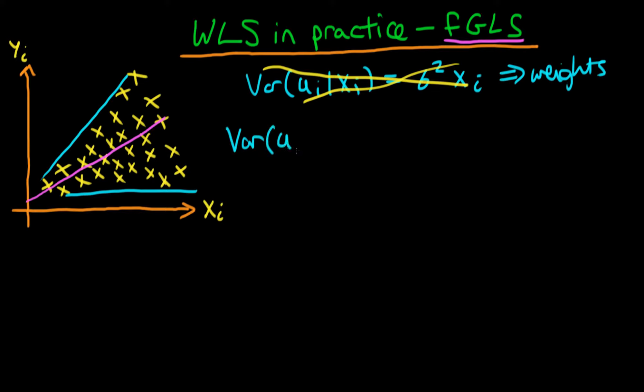The model which we specify is that the variance of ui given xi is equal to sigma squared times the exponent of a linear combination of all of our independent variables. Because now we're talking about the case whereby we can have more than one right-hand side independent variable, so we've got delta 0 plus delta 1 times x1i all the way up to delta p times xpi.